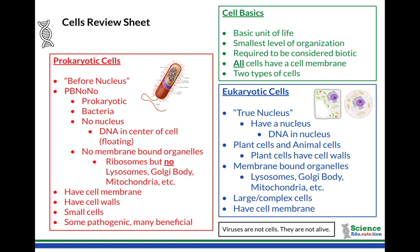All cells have a cell membrane. A cell membrane is different from a cell wall, so make sure you remember that difference. The cell membrane is kind of like a squishy little water balloon around the outside of the cell. It keeps things inside the cell in, and things that are not supposed to be inside the cell are kept out. It's also called a phospholipid bilayer or a plasma membrane. There are only two different types of cells, so let's look at the similarities and differences between them.